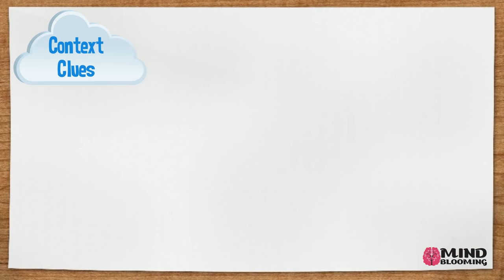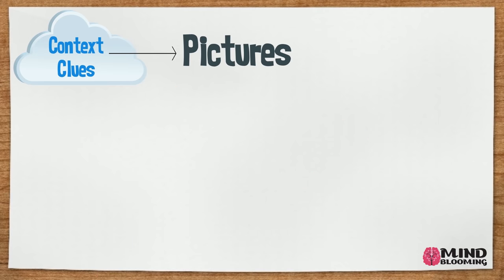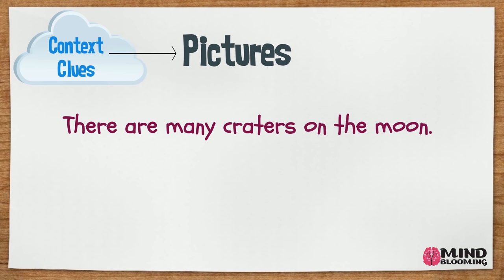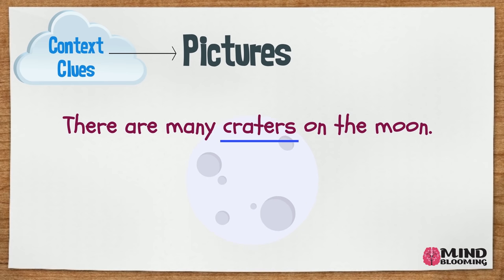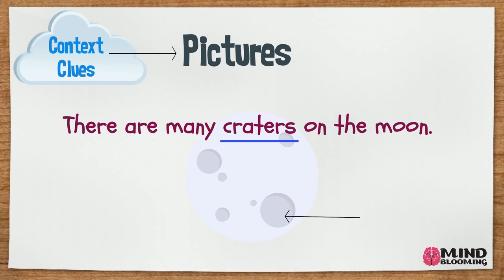Let's see how we can use pictures to give us clues to the meaning of a word. There are many craters on the moon. If you don't know what the word crater means, you might look at this picture of the moon and guess that it is these round circles on the moon. If you do, you will be correct because craters indeed are these round and hollow areas on the moon.